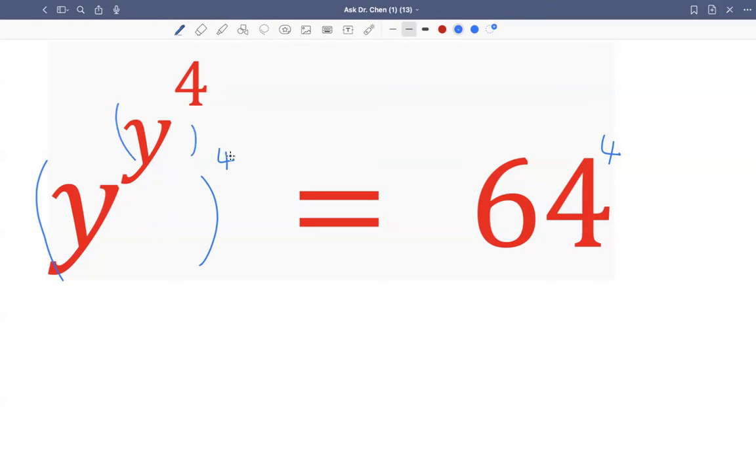Then we have another layer. So we get y to the fourth multiplied by y to the fourth, which equals 64 to the fourth.